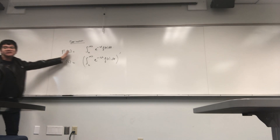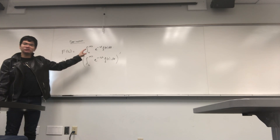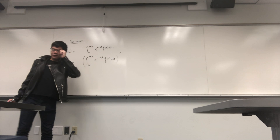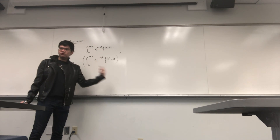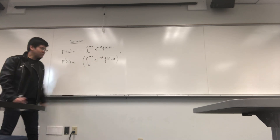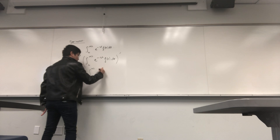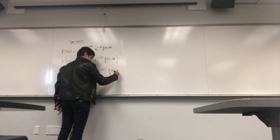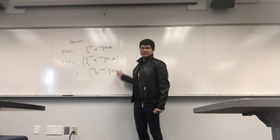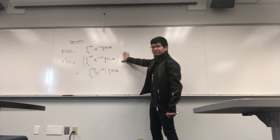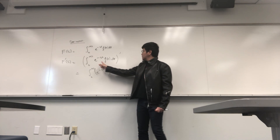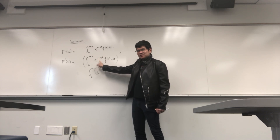The Laplace transform of the function f is the integral from 0 to infinity of f(t) · e^{-st} dt. Now we want to take the derivative of this integral in s. Since only e^{-st} depends on s inside the integral, we take the derivative of e^{-st} only and multiply that with f(t), then integrate.